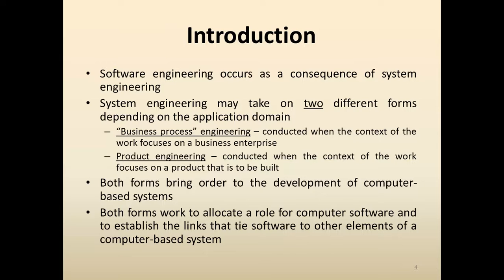In Business Process Engineering, this is conducted when the context of the work focuses on a business enterprise. In Product Engineering, this is conducted when the context of the work focuses on a product that is to be built. Both forms bring order to the development of Computer Based Systems and work to allocate a role of computer software and establish the links that tie software to other elements of a Computer Based System.